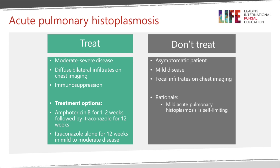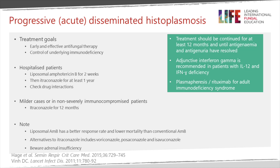In patients who are not that ill and ambulant, itraconazole is also very active against histoplasmosis and is sufficient without having to initiate therapy with Amphotericin. Always check for drug interactions. In patients with disseminated histoplasmosis, it's important to give early and appropriate antifungal therapy, and if the underlying disease is poorly controlled, to try and control that.